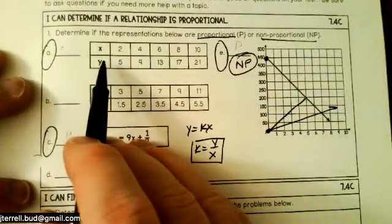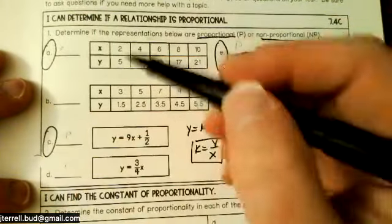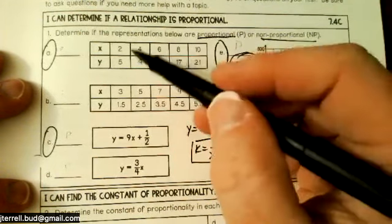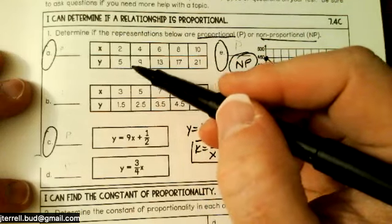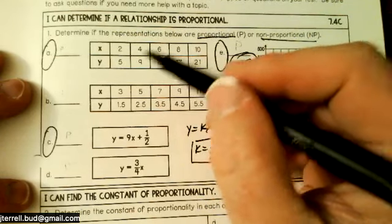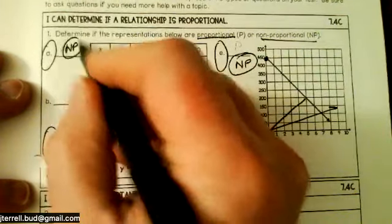For this to be proportional, every time I divide y by x, it's got to be the same number. So five divided by two is two and a half. Nine divided by four is two and a quarter. So this is different each time. So this is non-proportional.